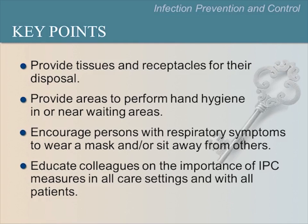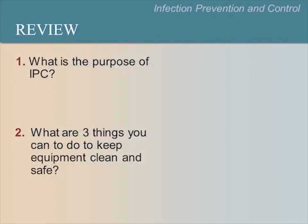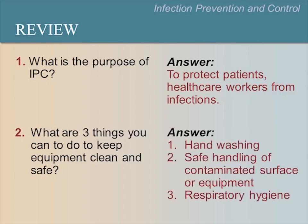We will reinforce these and other infection prevention and control guidelines during our hands-on sessions. Now we will discuss review questions. What is the purpose of infection prevention and control? The answer is to protect patients, healthcare workers, and communities from infections and transmission of disease. What are three things you can do to keep equipment clean and safe? The answer is hand washing, safe handling of potentially contaminated equipment or surfaces, and respiratory hygiene.